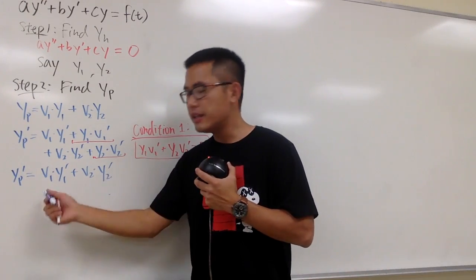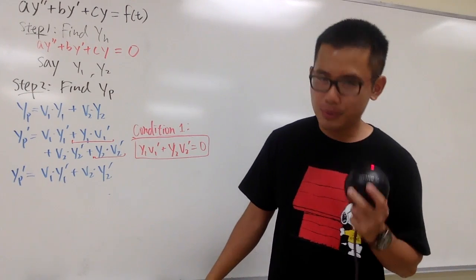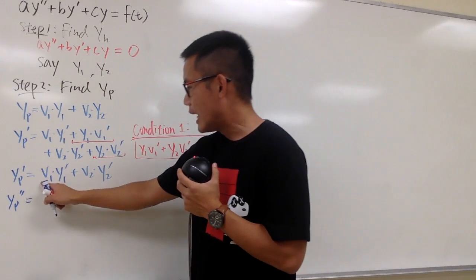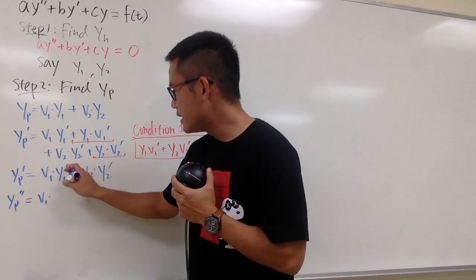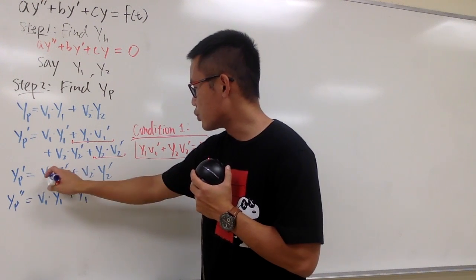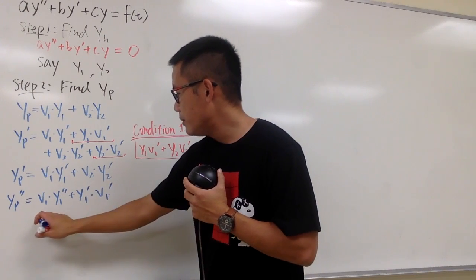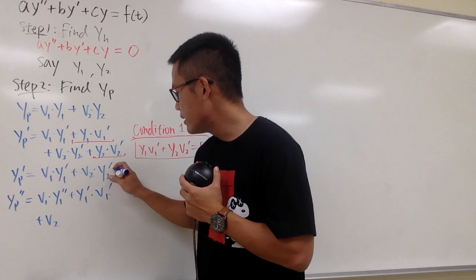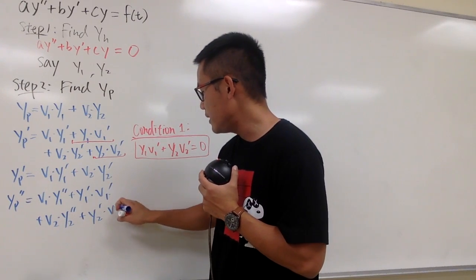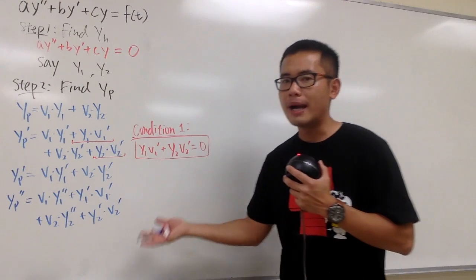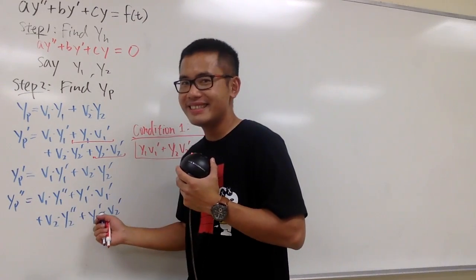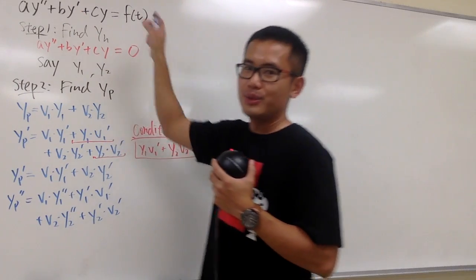Now we differentiate the simplified yp' again to get yp''. Using the product rule: yp'' = v1·y1'' + y1'·v1' + v2·y2'' + y2'·v2'. This is slightly better and we can now plug everything into the original equation.